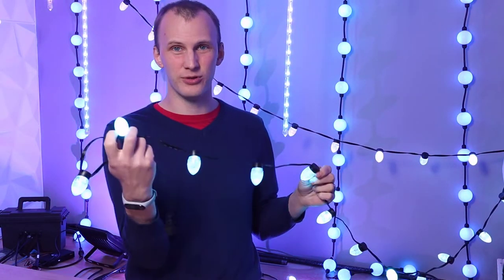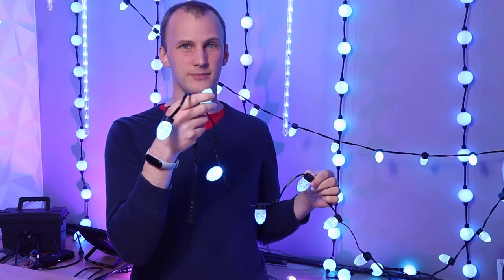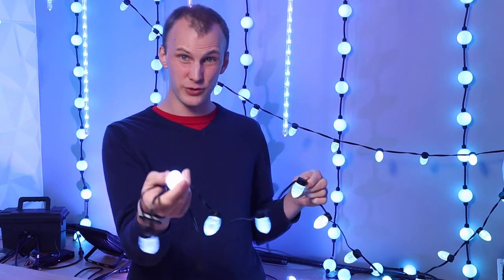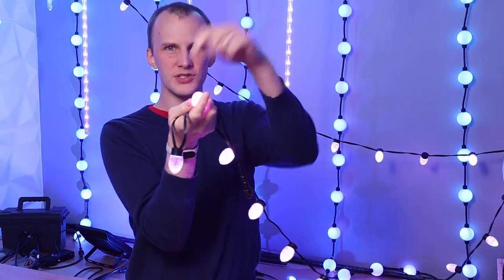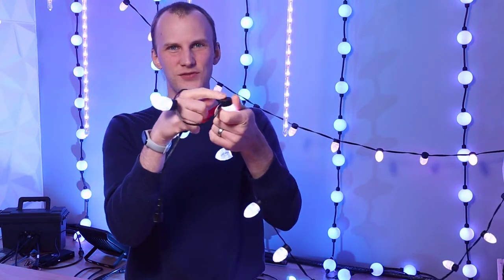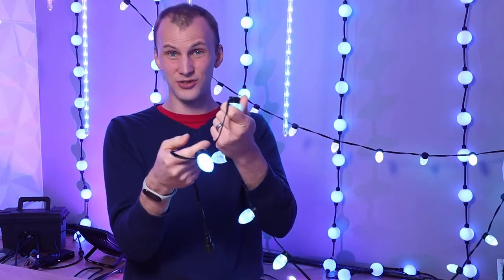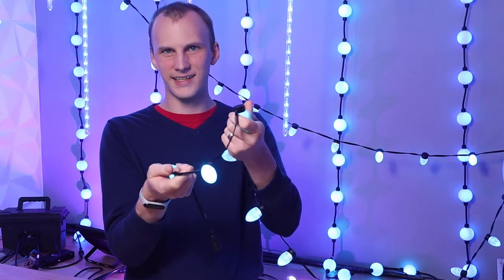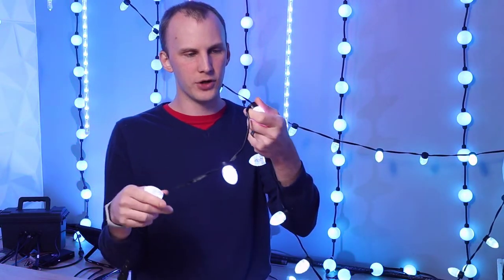And you can get these a lot of different places. Different people sell them. These are Pixa bulbs, Pixa strings, they're sometimes called. Some of them are flat across the bottom, like this. This is flat. Like I can see mounting a magnet on this or just a little adhesive thing and sticking it onto my house. There are ones where the wires come out of the back as well.